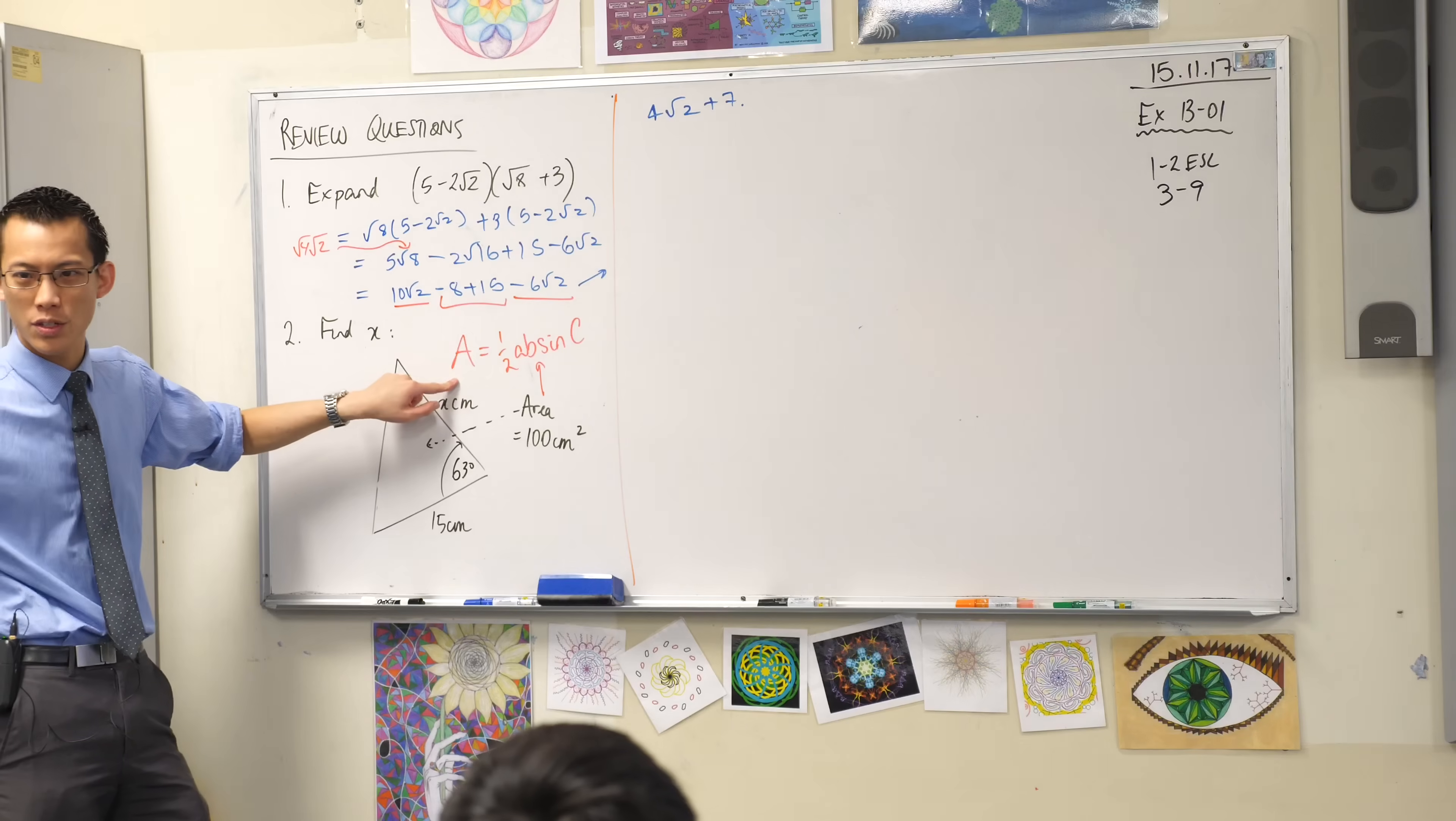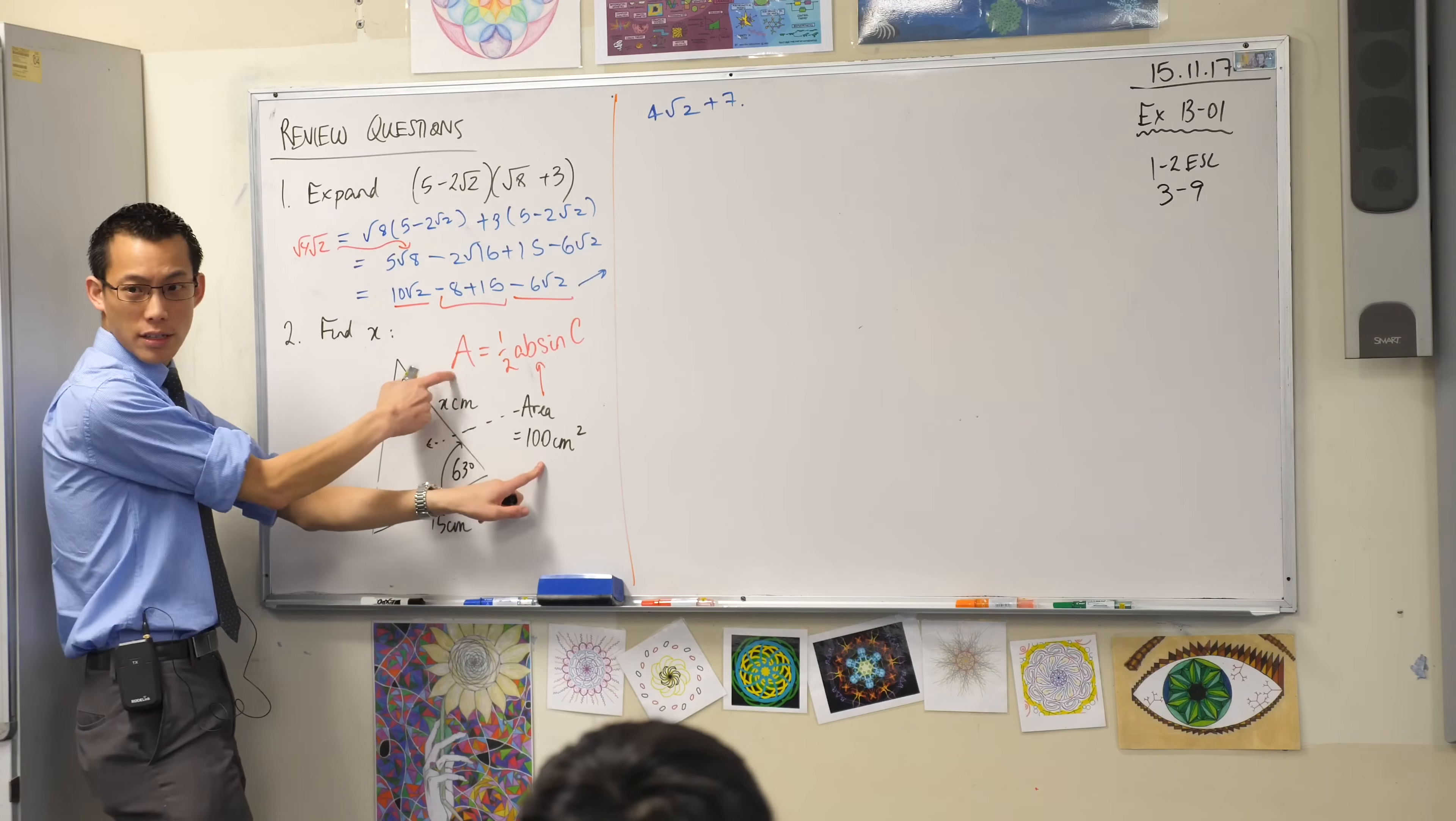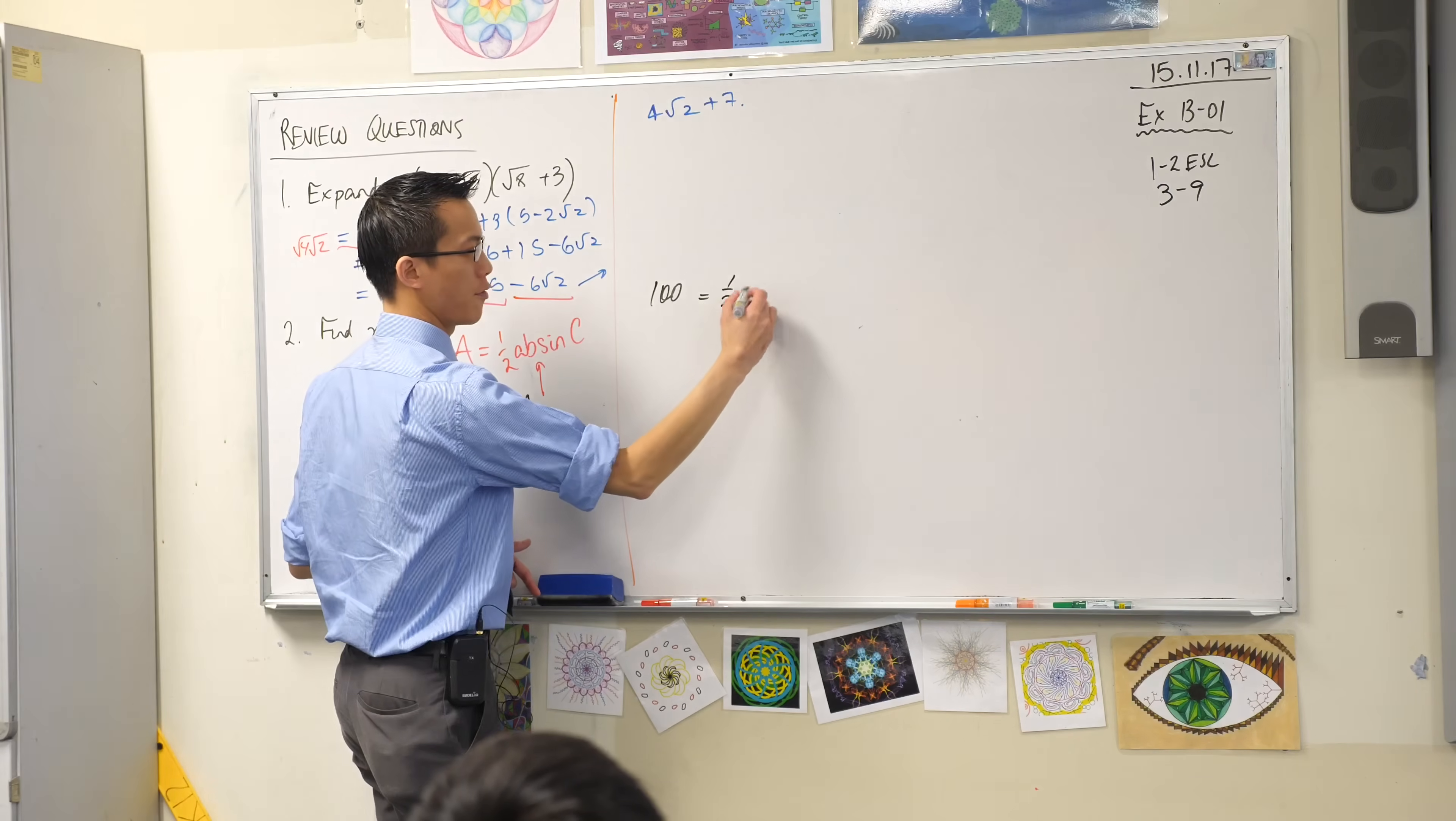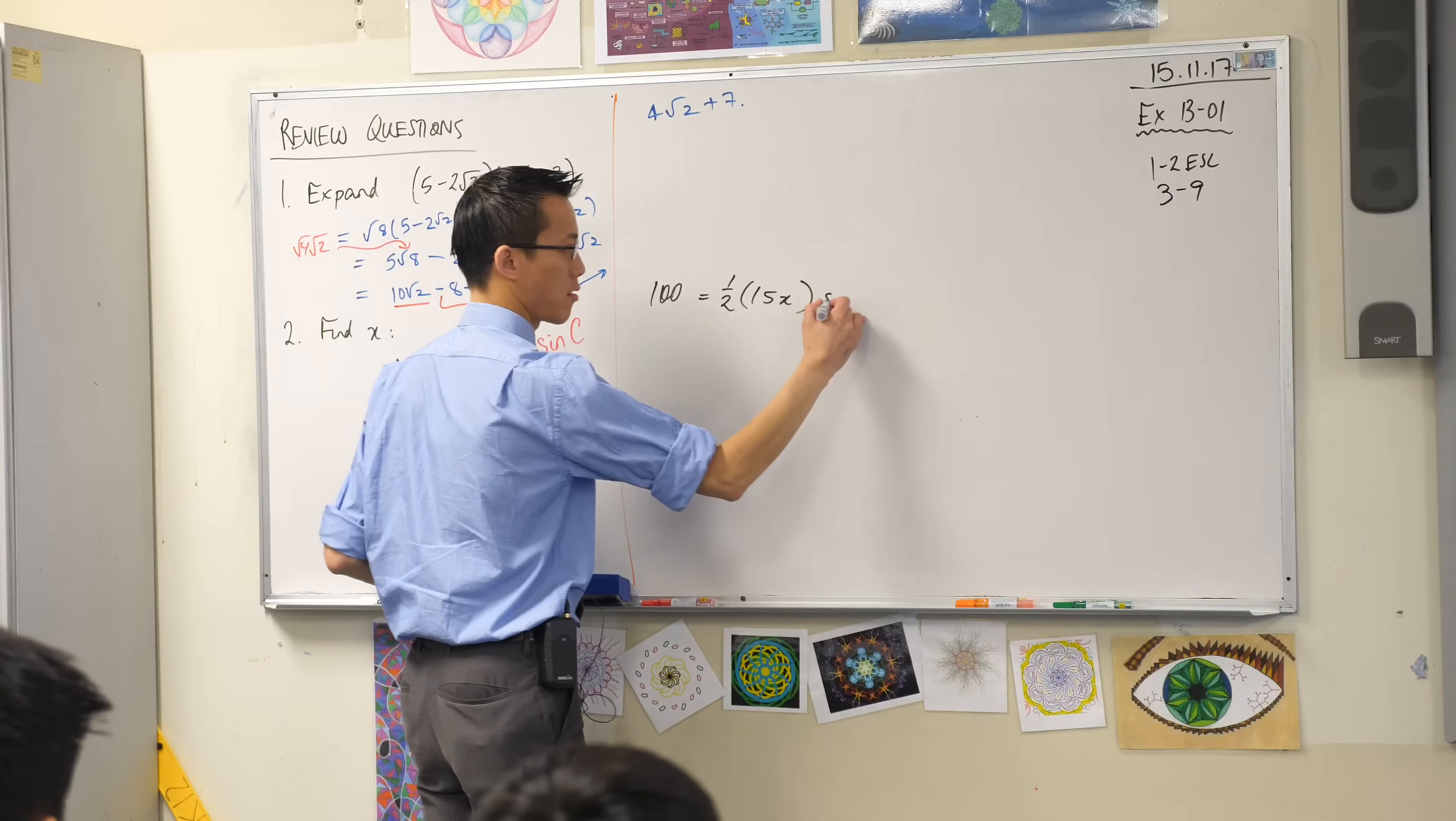That's a bit weird because usually you know all these things and you have to find this, but what have I done, kind of switched around. Yeah, I've given you the area. So this is what my working would look like. I'll go back to a more legible color. The area is on the left hand side, so my first line of working would start with 100 equals, and then I start to put in the information I know: a half, a and b doesn't matter which one is which, so 15x, and then sine this angle in here, 63 degrees.